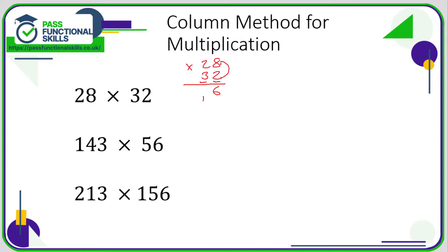So that's the 2 eights done. Now 2 times 2 is 4, plus that carried 1 makes 5. You don't need to put the arrows in — I'm just trying to reinforce what I'm doing. On the next line we're going to repeat this process using the 3, but before I do that I'm going to put in a 0 — I'll explain why in a second.